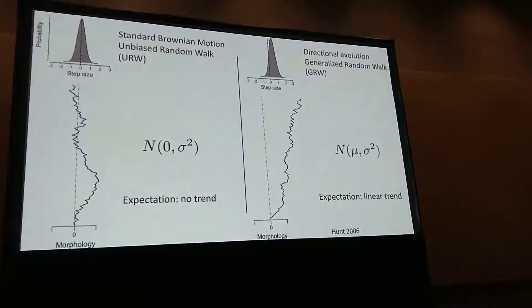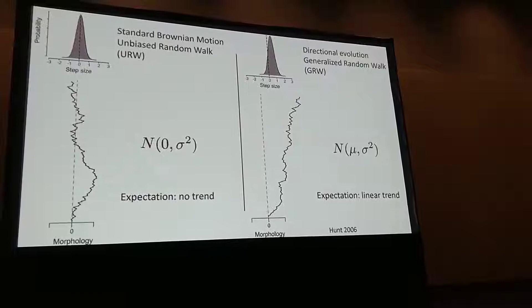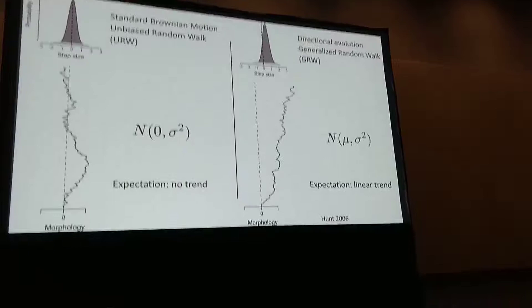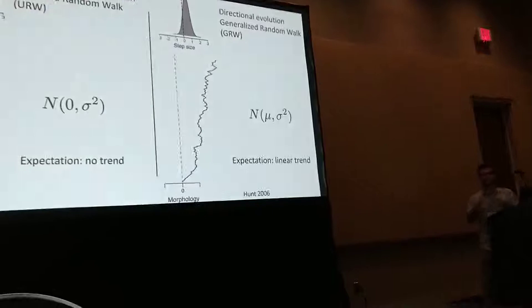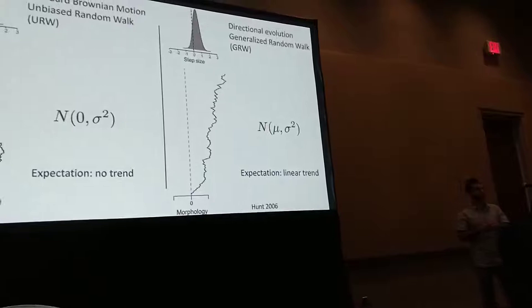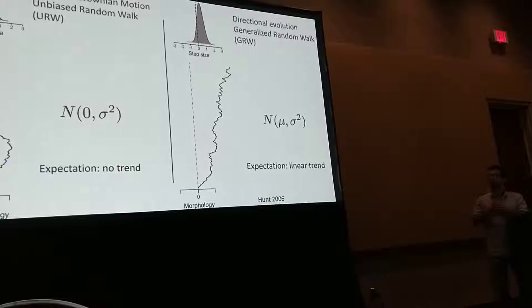To understand what it means to be a random walk for a fossil time series: we're basically trying to model the step size between populations of ancestral and descendant fossils. If those step sizes conform to a normal distribution centered at zero, that's a random walk. If the distribution of step sizes differs from zero, then you have gradual directional evolution — increasing or decreasing.